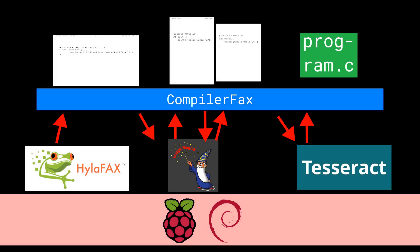If it does find it, then it needs to compile and run the code, and generate a report to send back. This is the point at which lots of people say, 'Whoa, wait a minute. I just realized that this thing is going to run arbitrary C code sent to it by a random person with a fax machine. What if they send malicious code? An infinite loop? A fork bomb? What happens then?' Those sound fun. Let me try.